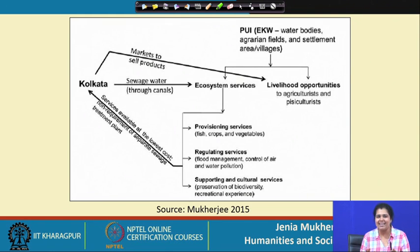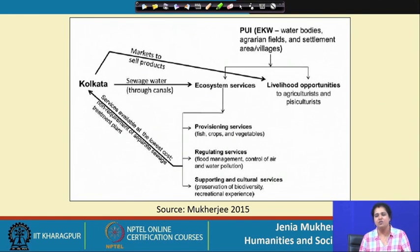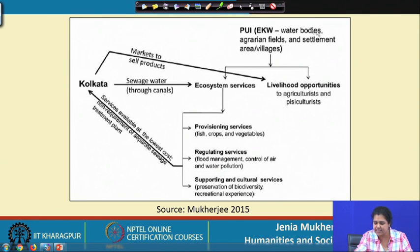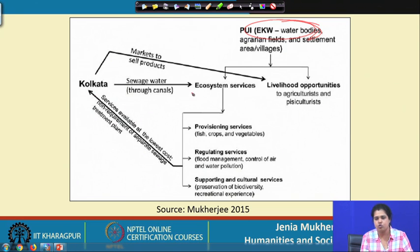It is an absolutely ecologically subsidized city, totally dependent on the functioning of the canals and also the wetlands. There are sustainable flows between the two: the East Kolkata wetlands depend on the city because they receive sewage water through the canals.